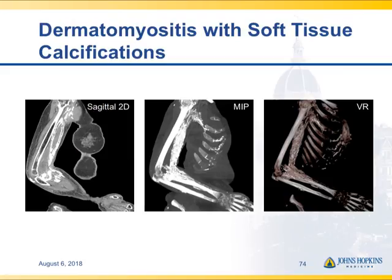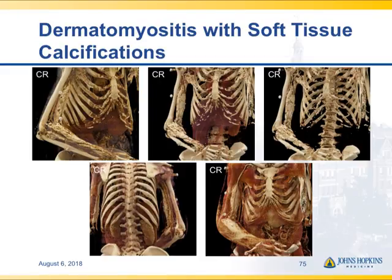Looking at soft tissues from sagittal to mid-volume rendering of a patient with dermatomyositis with extensive soft tissue calcifications — the extent of the calcifications is even better seen on the series of cinematic renderings. Anything with soft tissue, anything with muscle, showing the variations between muscle and soft tissue, bone and fat — cinematic rendering is very, very good at that.